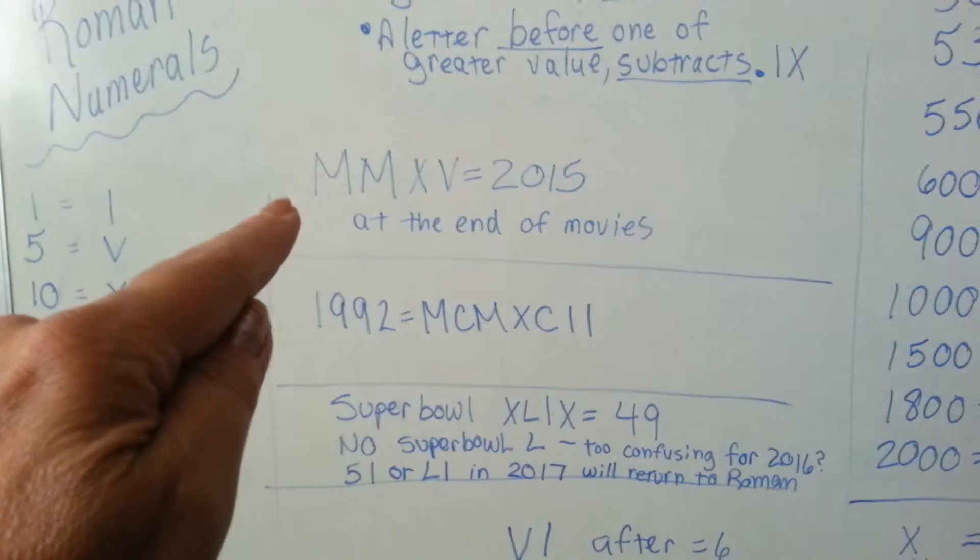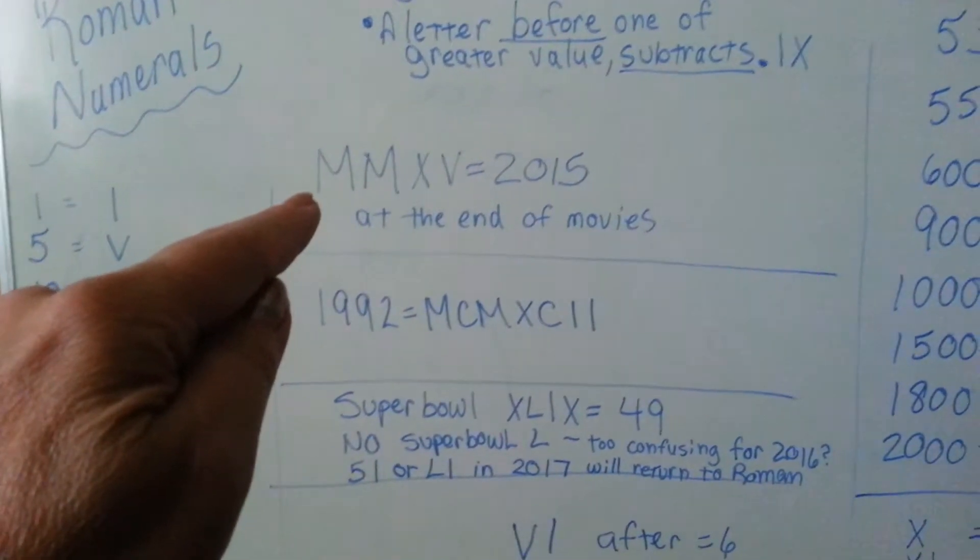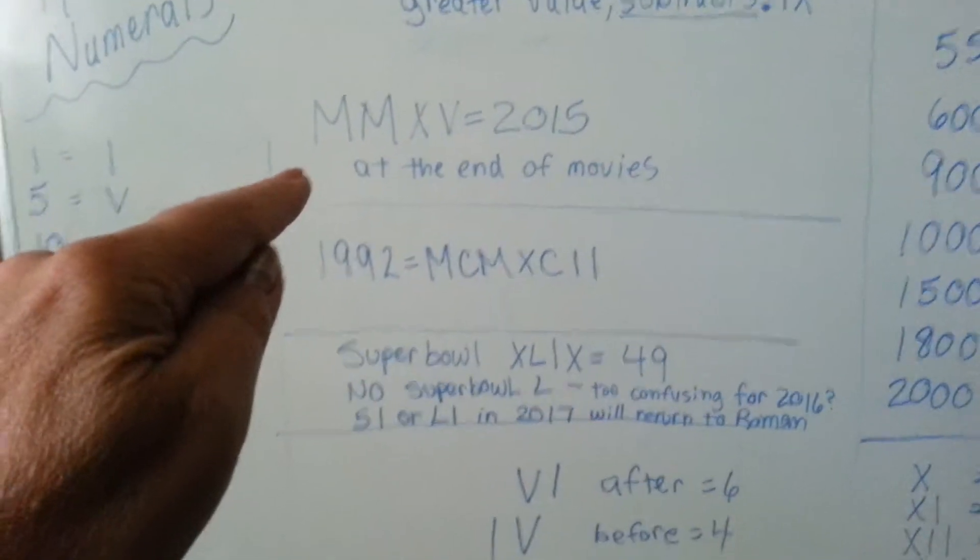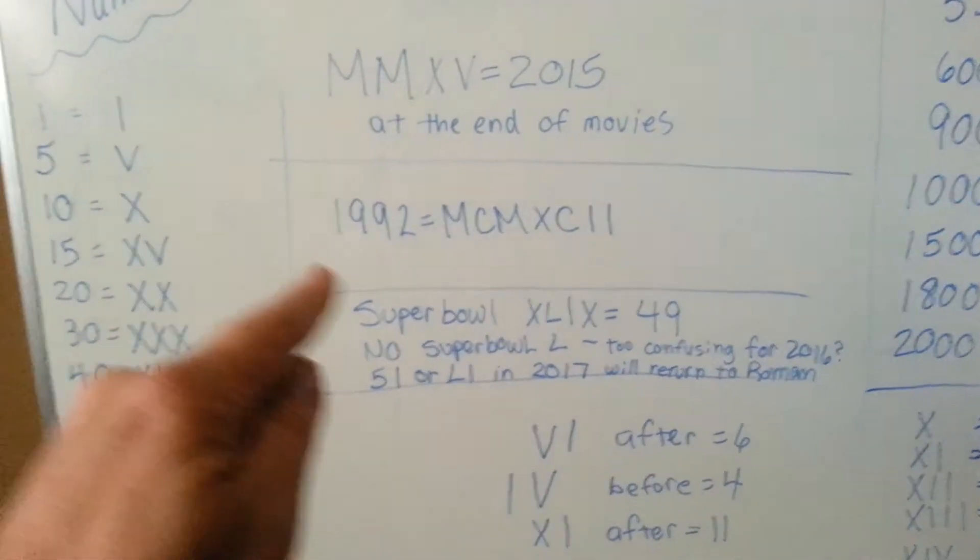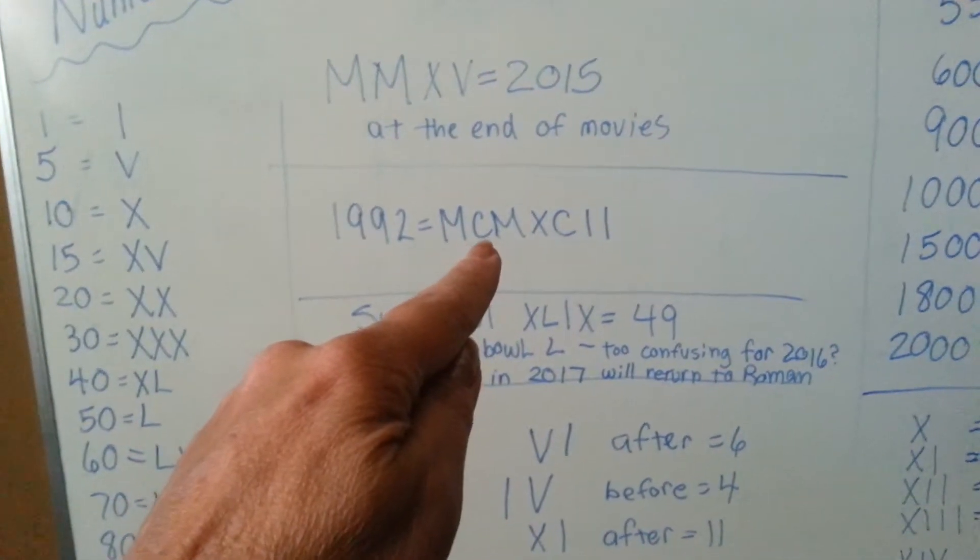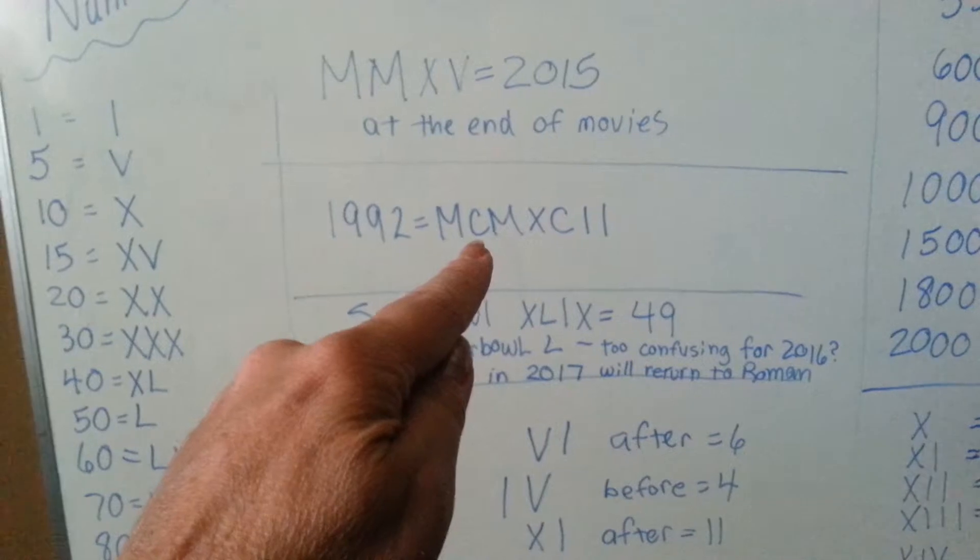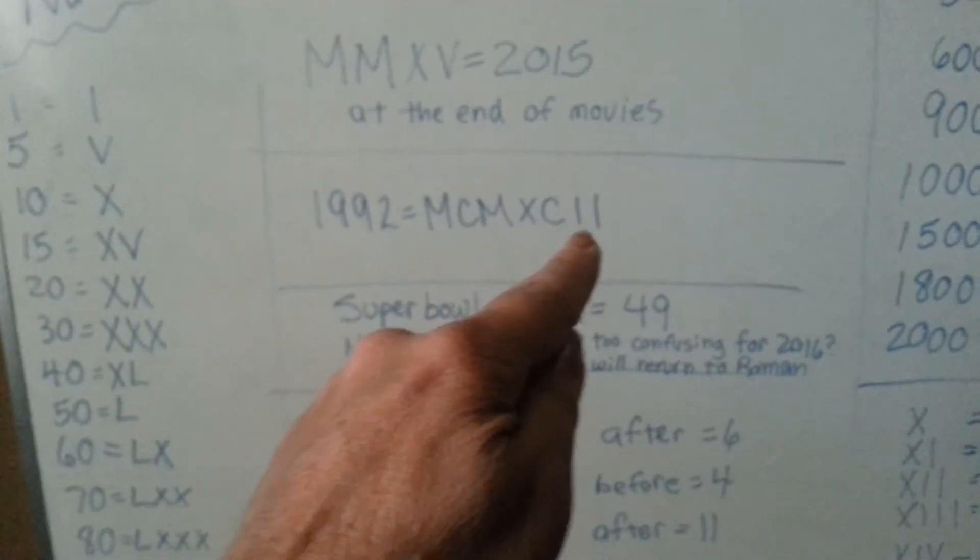So, 2015 would be written as MMXV, and you'd see these at the end of movies. This would be 1992. You would write 1000, and then 1000 minus 100 to make the 1900, then 100 minus 10 to make 90, and 2.